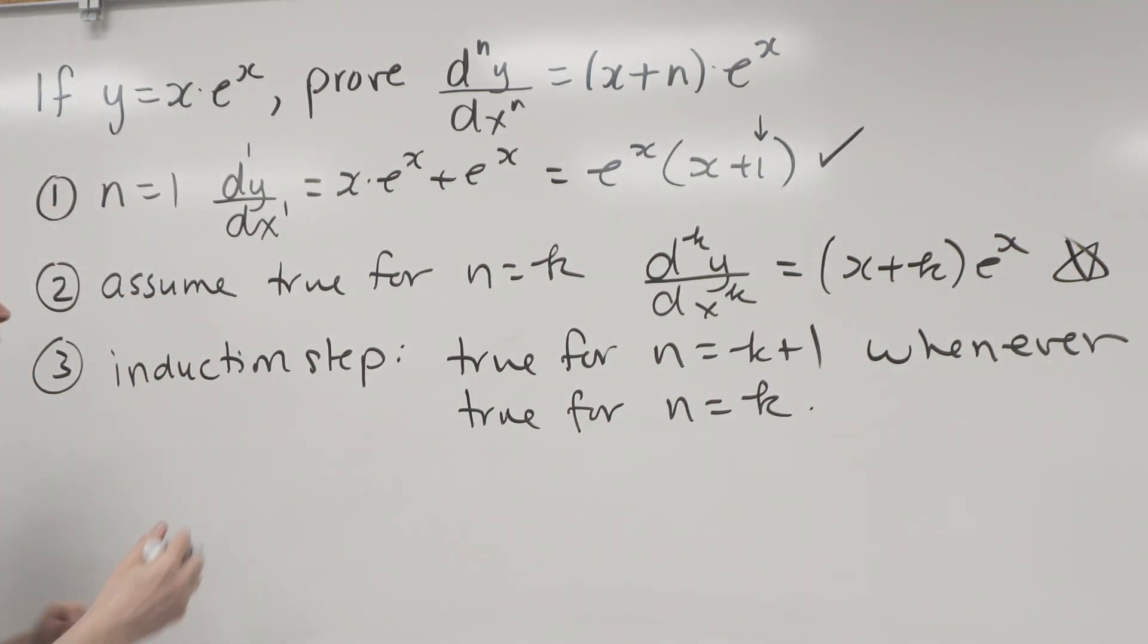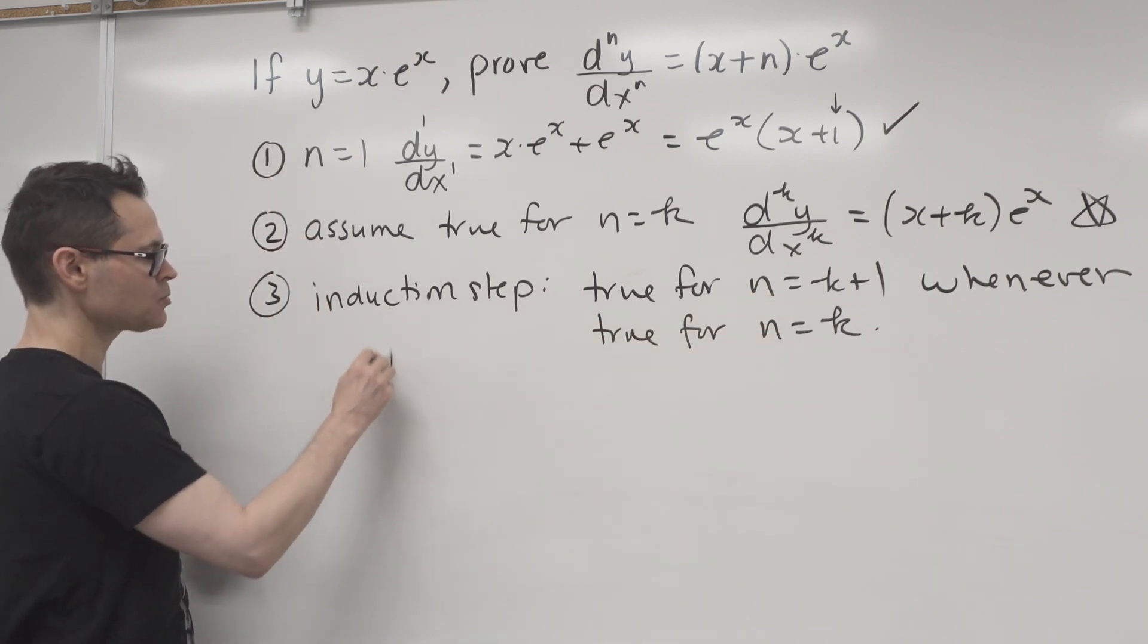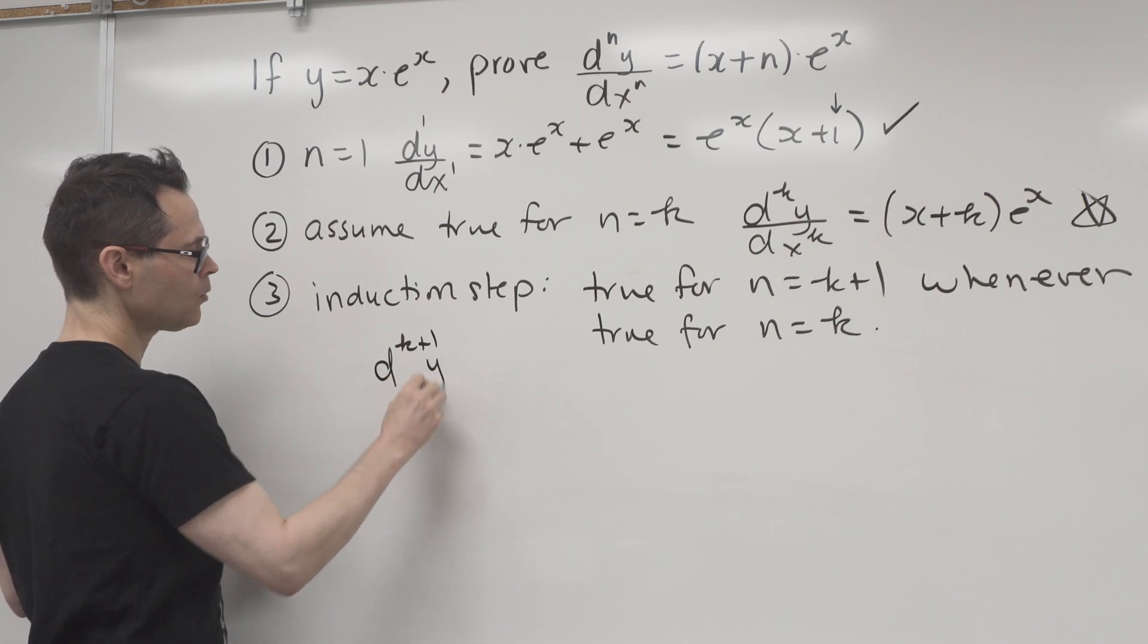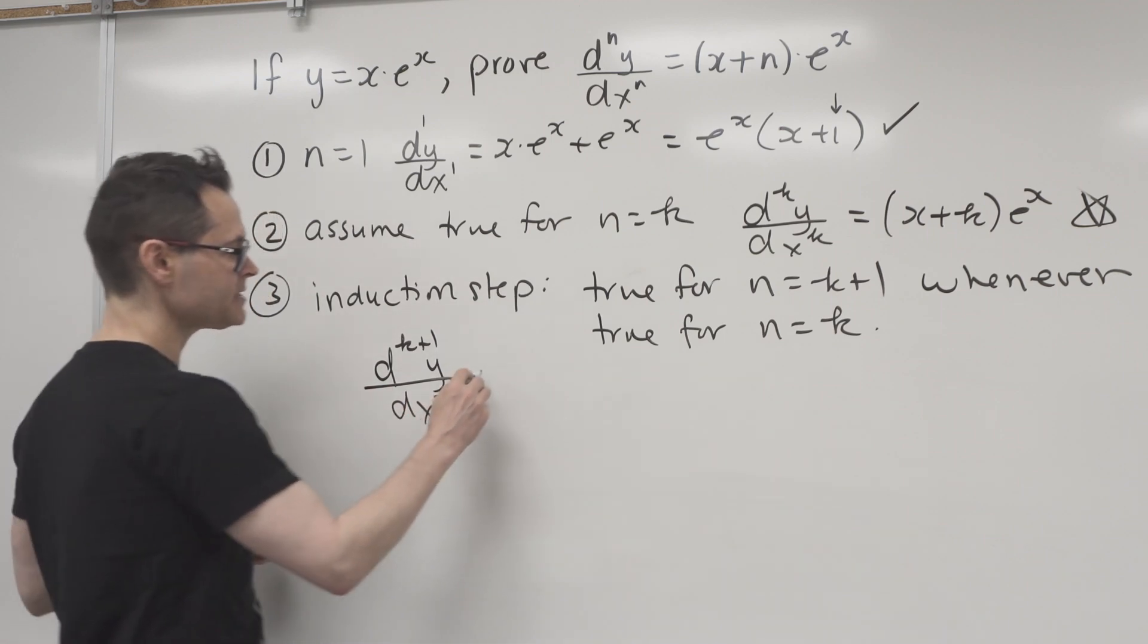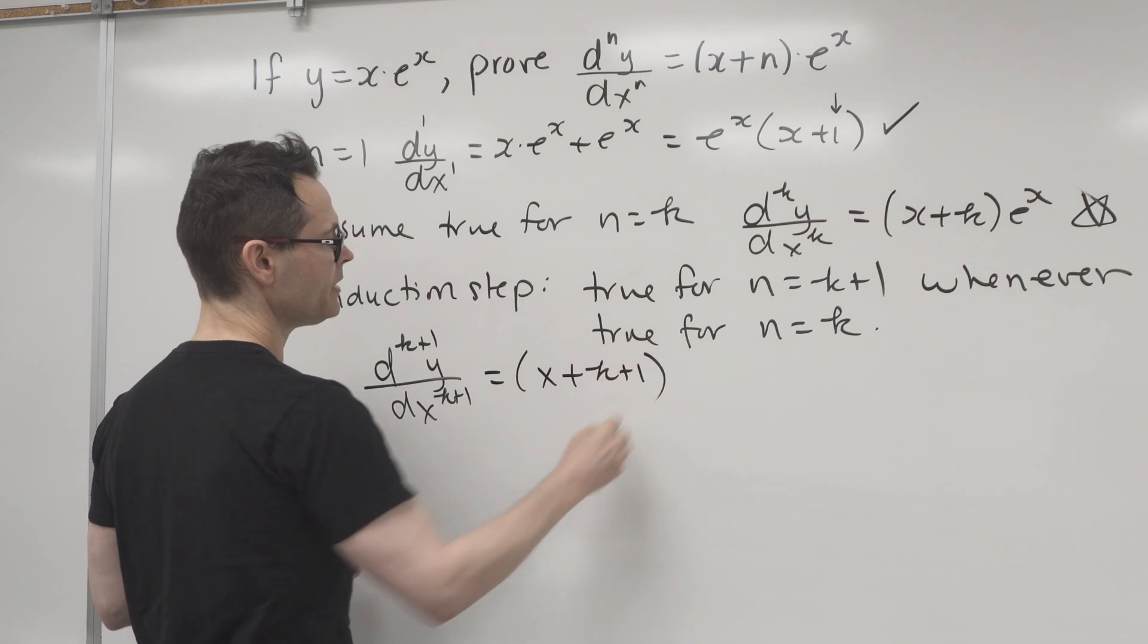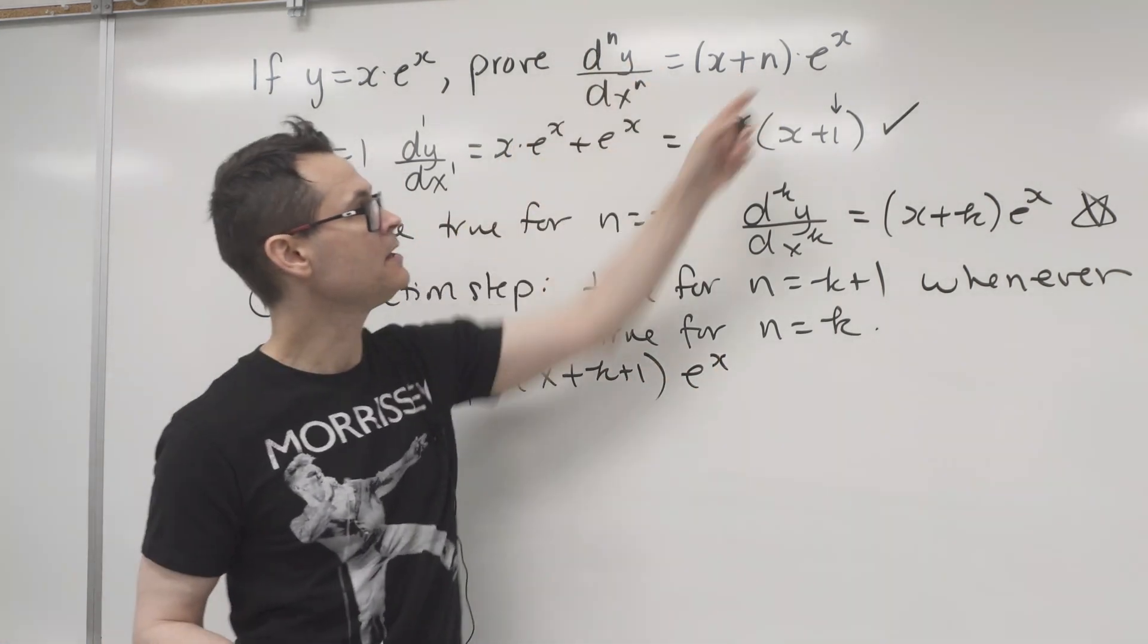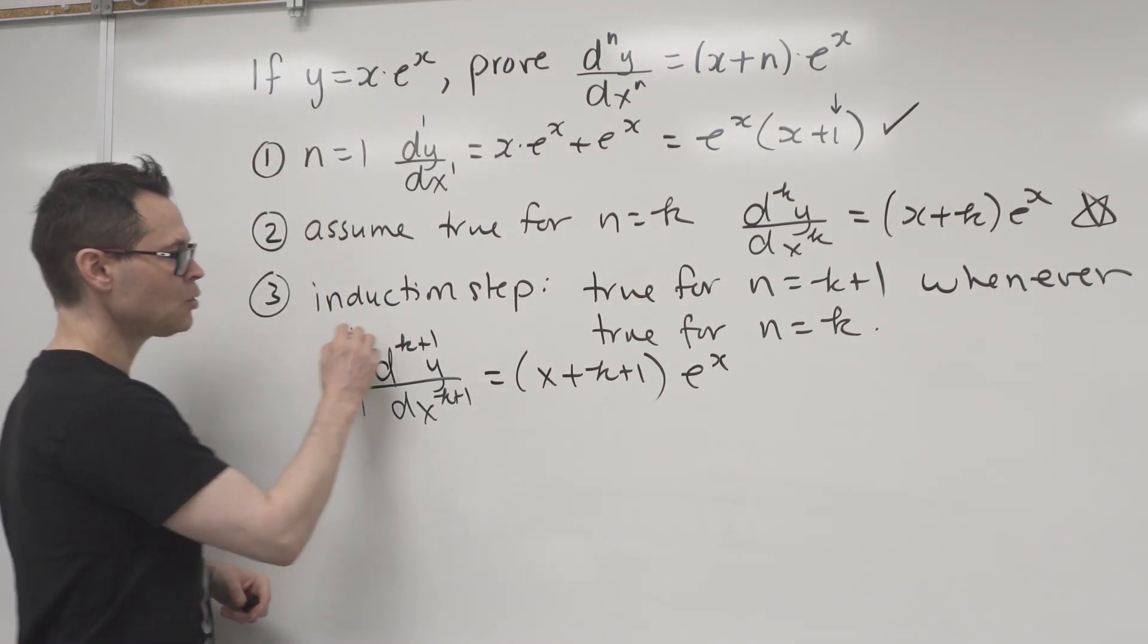What we want to work toward here is that if it's true for k plus 1, we want the k plus 1th derivative. So k plus 1, y, of dx k plus 1. So we want to work toward showing that that's equal to x plus k plus 1 times e to the x. Do you see? I'm just simply putting k plus 1 into where we see the n. So this is what we want to work toward.